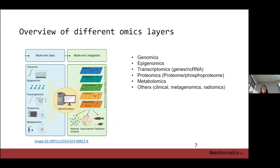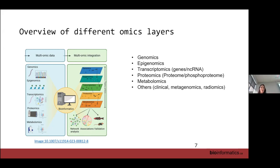These are the classical omic layers normally integrated into multi-omic models. Starting from the hierarchy — even if no single layer is more important than another — the first is genetics: the DNA sequence and genetic variants, normally obtained through sequencing. We also have epigenomics, which are reversible modifications to the genome such as histone marks and DNA methylation. Then transcriptomics, also obtained by sequencing, where we measure gene expression or non-coding RNAs. And of course proteomics, including the phosphoproteome.